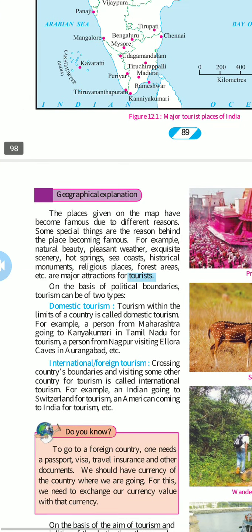The places shown on the map have become famous due to different reasons. Some special things are the reason behind a place becoming famous. For example, natural beauty, pleasant weather, exciting scenery, hot springs, sea coast, historical monuments, and religious places are major attractions for tourists. On the basis of political boundary, tourism can be divided into two types.